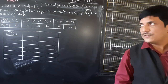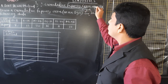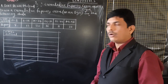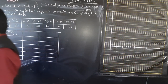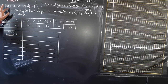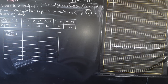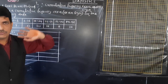Our next topic is cumulative frequency curve, also known as an ogive. Cumulative frequency curve or ogive - how to draw it, that we are going to see. There are two types: less than method and greater than method. First we are going to see the less than method. We have already seen how to prepare the table for the same.